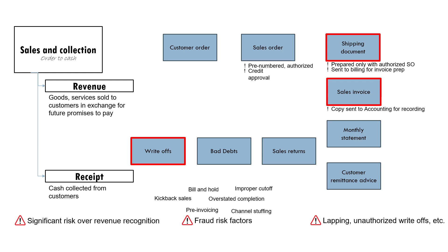We must also mention the possibility of lapping — misapplying a collection from one customer to another. For example, Customer A pays their account, but the personnel who received the collection decided to keep the money. When Customer B pays, that payment is applied to Customer A's account; when Customer C pays, it is applied to Customer B, and so on. Lapping is another fraudulent transaction in the audit of the sales and collection cycle, along with unauthorized write-offs — like recording a collection as a write-off instead.